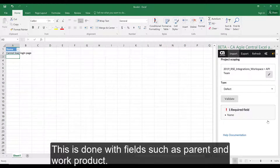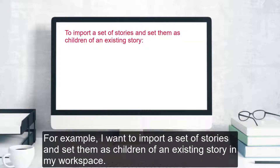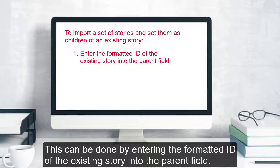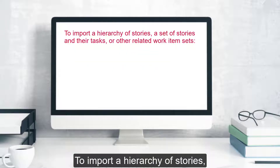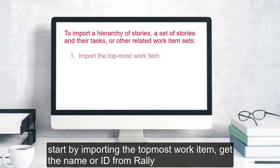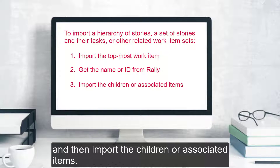This is done with fields such as parent and work product. For example, if you want to import a set of stories and set them as children of an existing story in your workspace, this can be done by entering the formatted ID of the existing story into the parent field. To import a hierarchy of stories, a set of stories and their tasks, or other related work item sets, start by importing the topmost work item, get the name or ID from Rally, and then import the children or associated items.